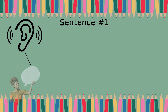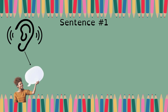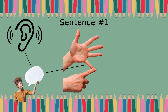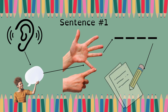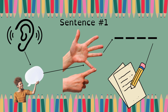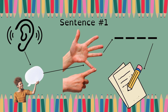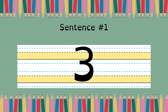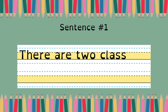Okay, get ready for sentence writing. Number one: there are two classes in line. Say it with me: there are two classes in line. Count it, draw your lines, write it: there are two classes in line. Check it: there are two classes in line.